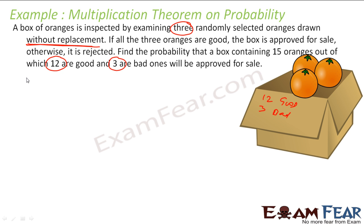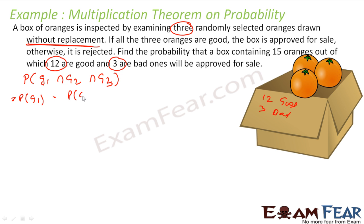The box is approved only when all three drawn oranges are good: first good, second good, and third good. The probability of approval equals probability of good1 into probability of second good given first is good, into probability of third good given first two are good.